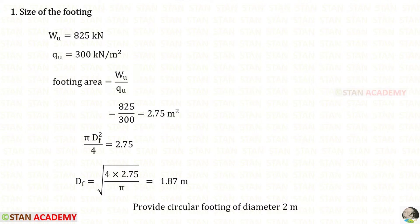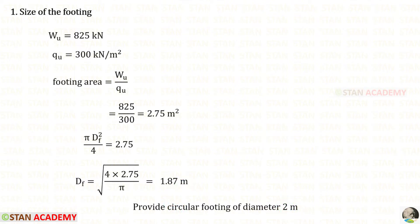We are designing a circular footing, so we use the area formula pi D squared upon 4 to find the diameter of the footing. This gives 1.87 meter, which we round up to 2 meter. Therefore, we provide a circular footing of diameter 2 meter.